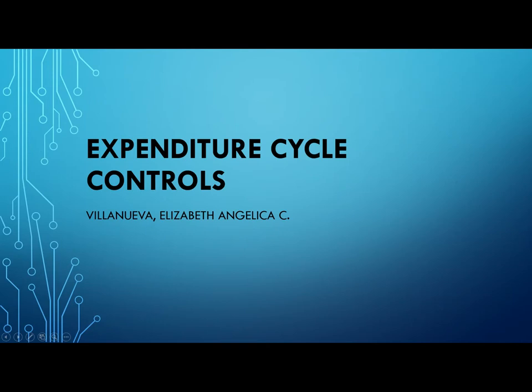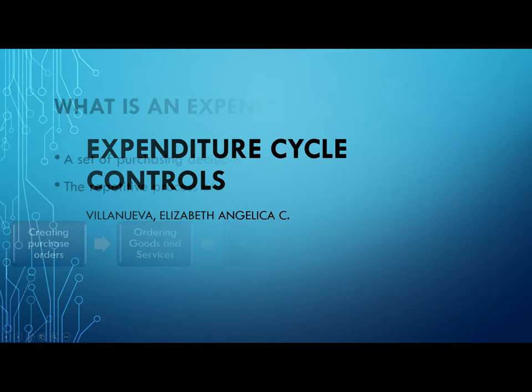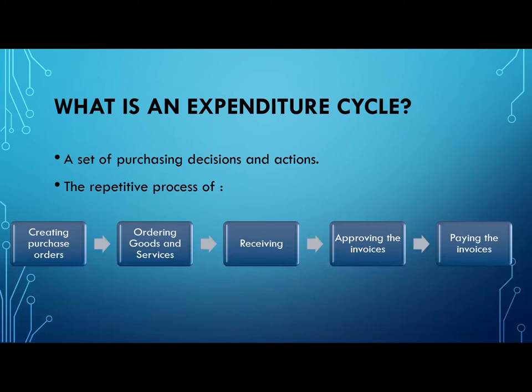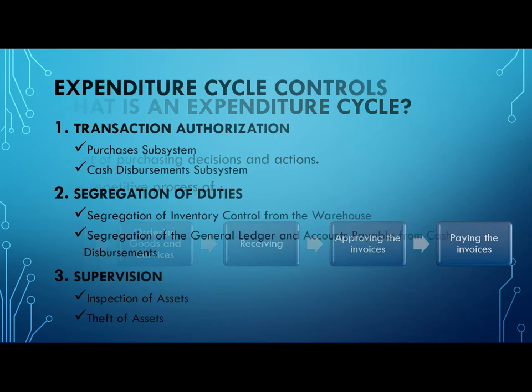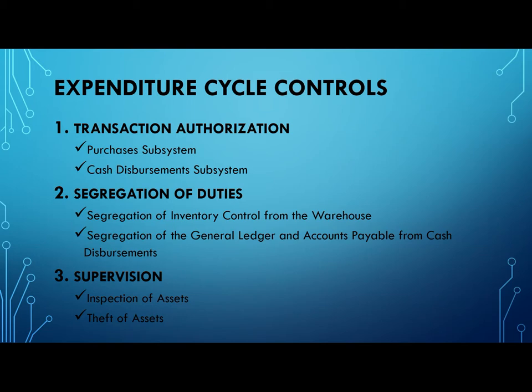Good day. I'm Angelica Villanueva and I'll be discussing the expenditure cycle controls. An expenditure cycle is a set of purchasing decisions and actions — the repetitive process of creating purchase orders, ordering goods and services, receiving, approving invoices, and the payment of said invoices. The purpose of these controls is to maintain order so that the process goes smoothly. The following are the expenditure cycle controls: transaction authorization, segregation of duties, supervision, accounting records, access controls, and independent verification.